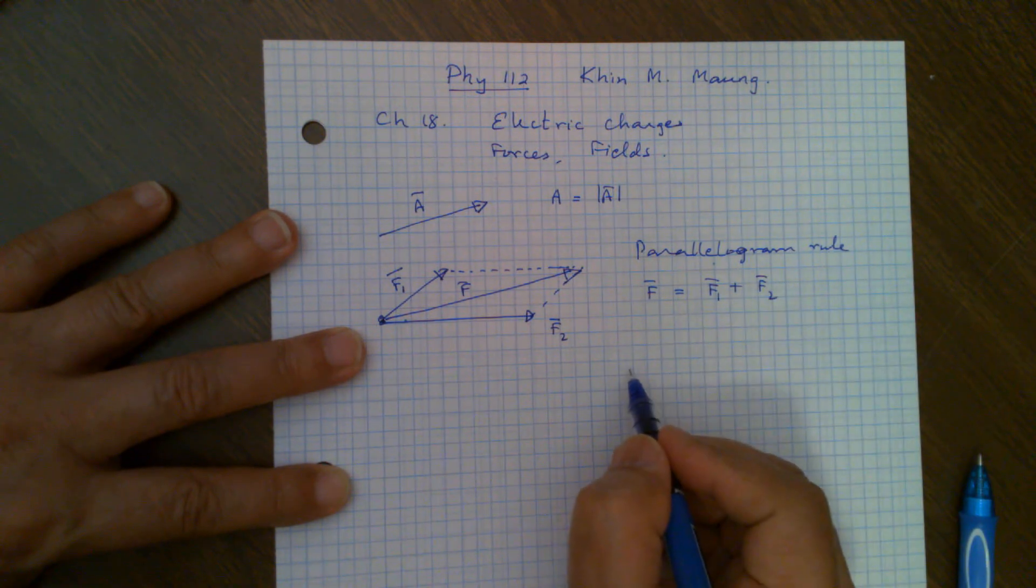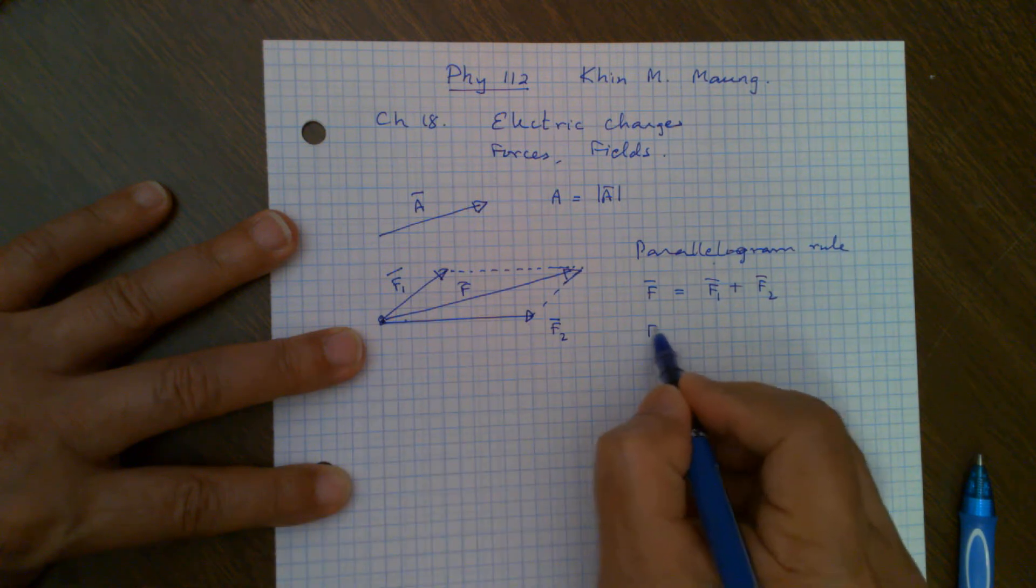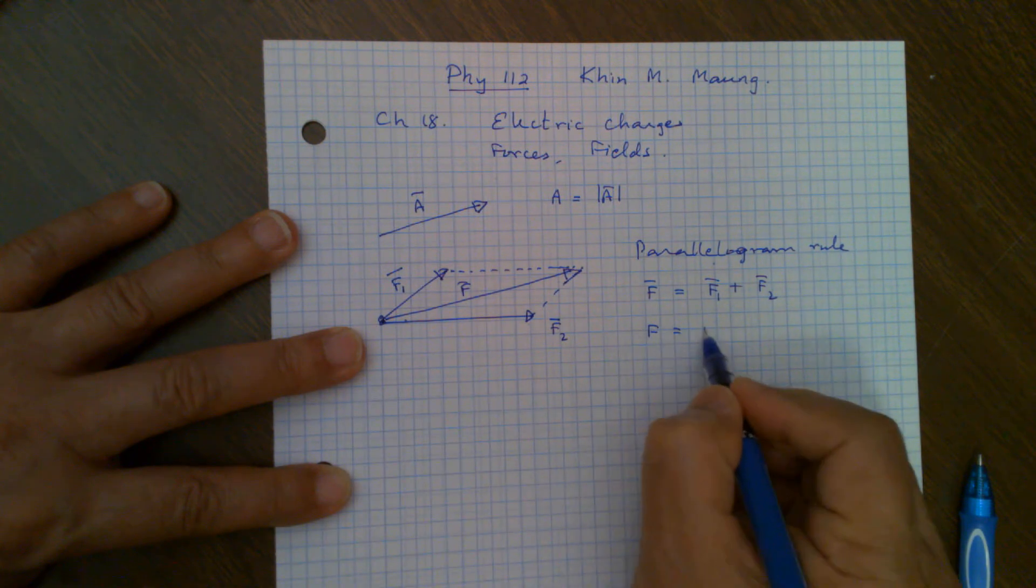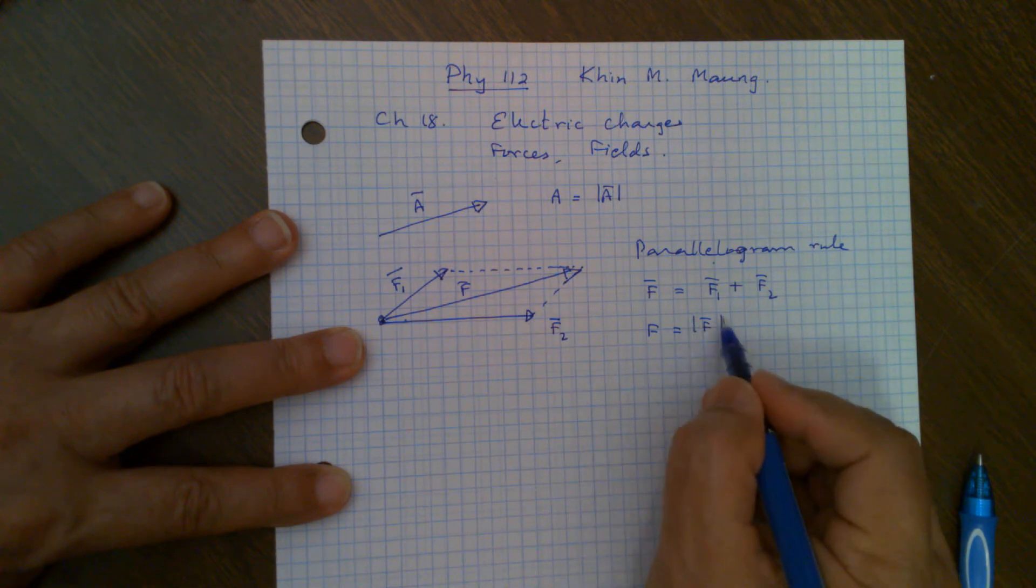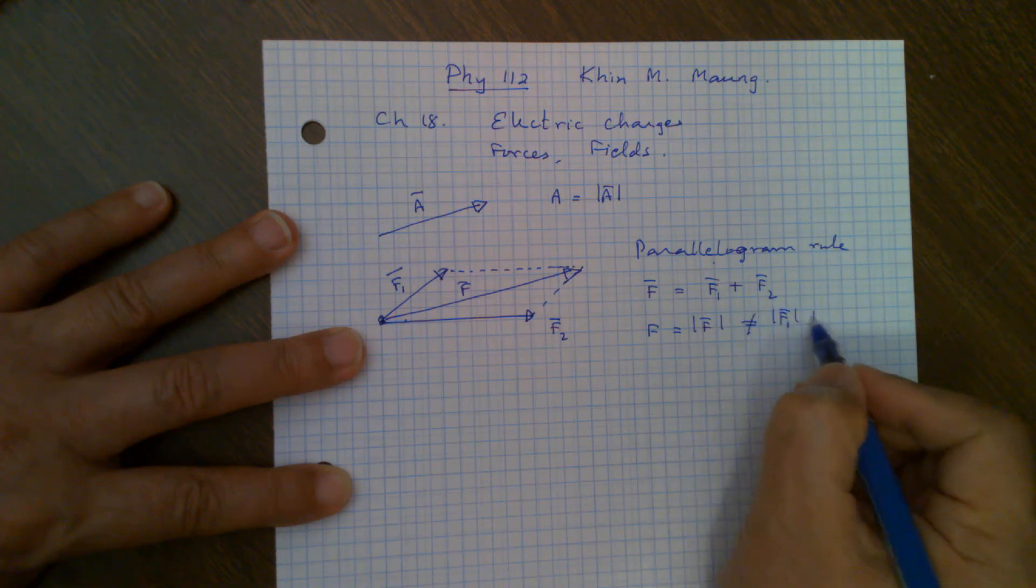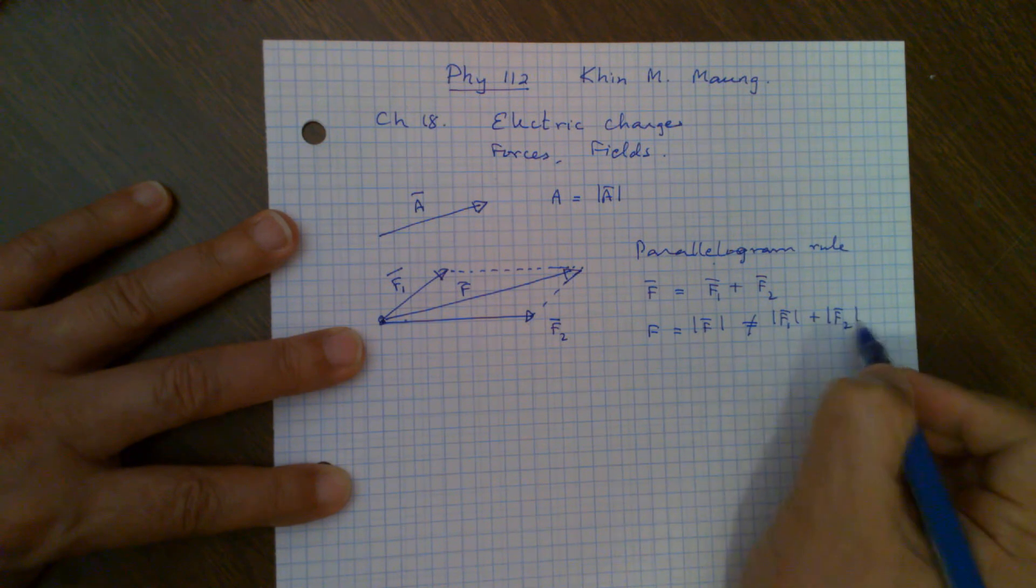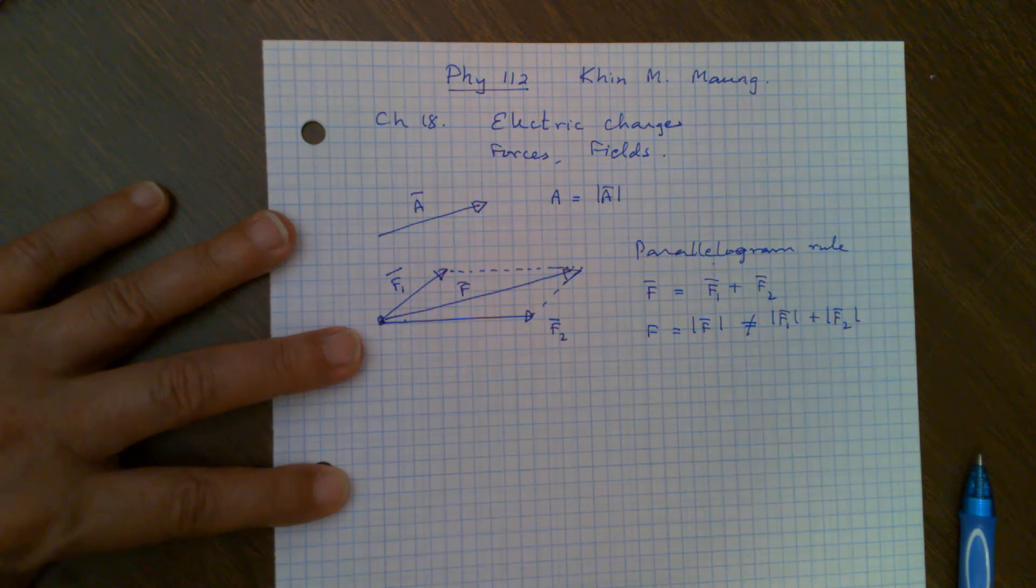Obviously, in general, unless this and this are aligned together, the magnitude F, sometimes we write F without a bar or sometimes we will write like this, is obviously not equal to magnitude of F1 plus magnitude of F2. In general, it will not be the same.